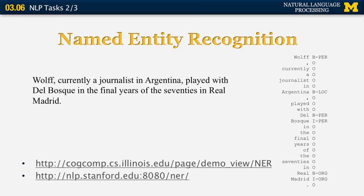The next NLP task is named entity recognition. Given a sentence like 'Wolf, currently a journalist in Argentina, played with Del Bosque in the final years of the 70s in Real Madrid,' we want to identify the named entities: people such as Wolf and Del Bosque, organizations like the soccer club Real Madrid, and countries such as Argentina. The output of a named entity recognition system labels Wolf as B-PER (beginning of a person), and the following comma as O (other), indicating Wolf is a single-word person entity.